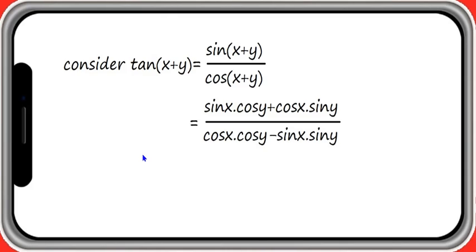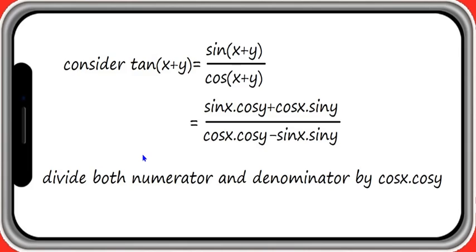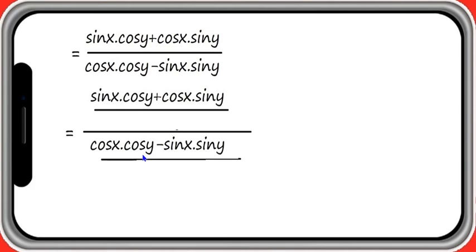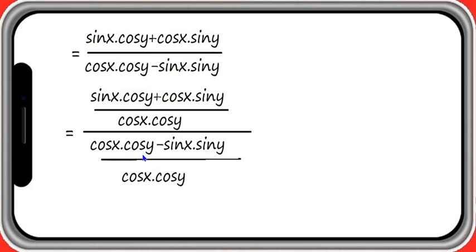Now, divide both numerator and denominator by cos x into cos y. If you divide both numerator and denominator by cos x cos y, rearranging the terms you can write: sin x cos y divided by cos x cos y plus cos x sin y divided by cos x cos y, whole divided by cos x cos y divided by cos x cos y minus sin x sin y divided by cos x cos y.